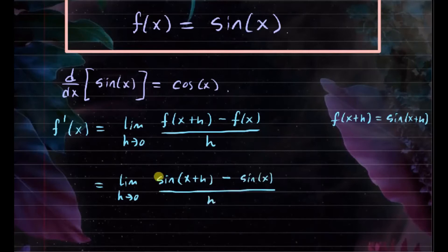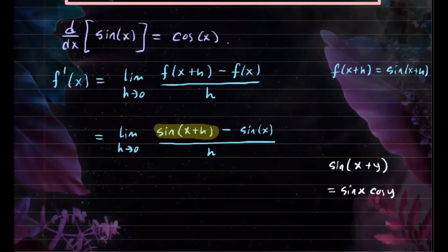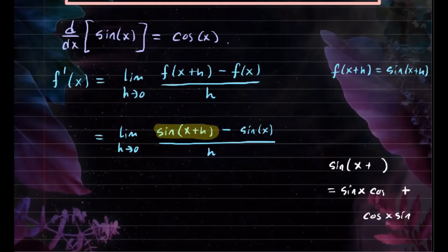The key idea here is to expand this by using the sum of two angles formula for sine. Recall that sine of x plus y equals sine of x cosine y plus cosine x sine y. Now, instead of y, we're using h, so we replace that: sine of x cosine h plus cosine x sine h.